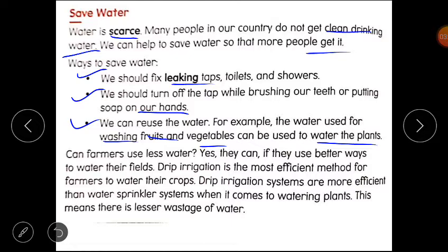Now students, tell me, can farmers use less water? Yes, they can. If they use better ways to water their fields, they can use less water if they use better ways. Drip irrigation systems are more efficient than water sprinkler systems when it comes to watering plants. This means there is lesser wastage of water. I hope you understand the lessons.